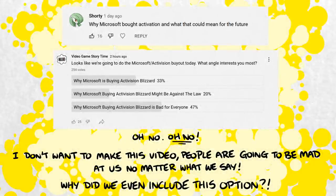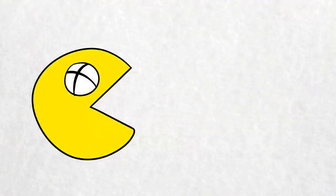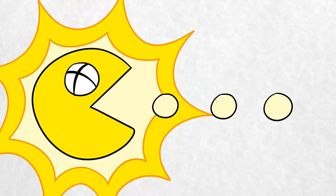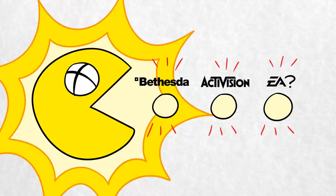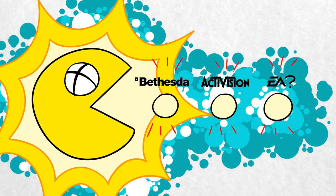Hours after the surprise announcement that Microsoft will attempt to purchase Activision Blizzard for an eye-watering $68.7 billion, the FTC announced plans to dramatically overhaul the process by which corporate mergers and buyouts are approved. This wasn't a direct response to the Activision deal, but it wasn't entirely unconnected.